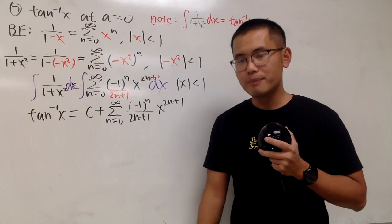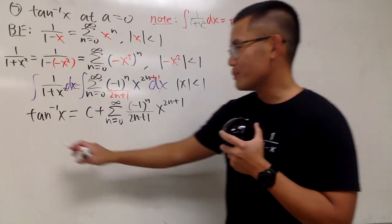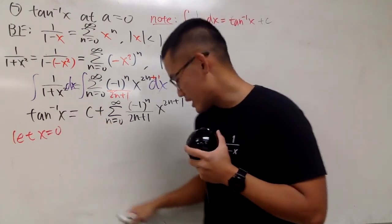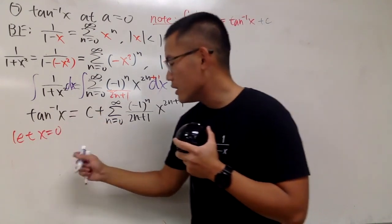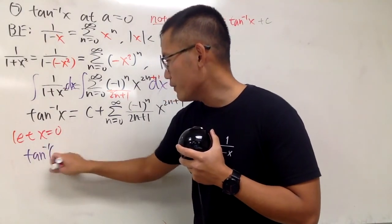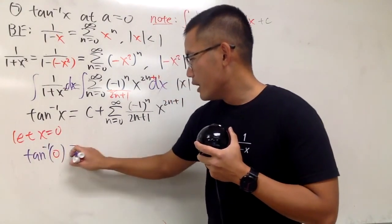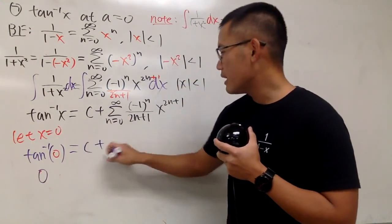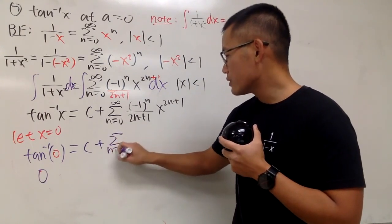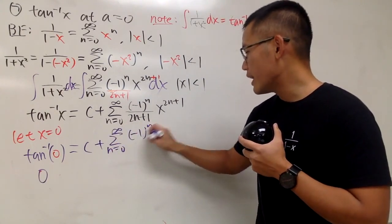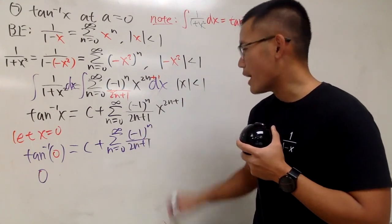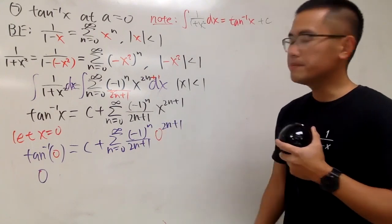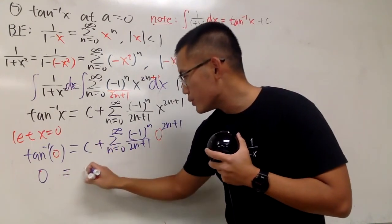We have to find out what C is. We are going to pick x equals 0 and put it in. We get the inverse tangent of 0, which is of course 0. Put that equal to C plus the series: n goes from 0 to infinity of negative 1 to the n over 2n plus 1 times 0 to the 2n plus 1 power.